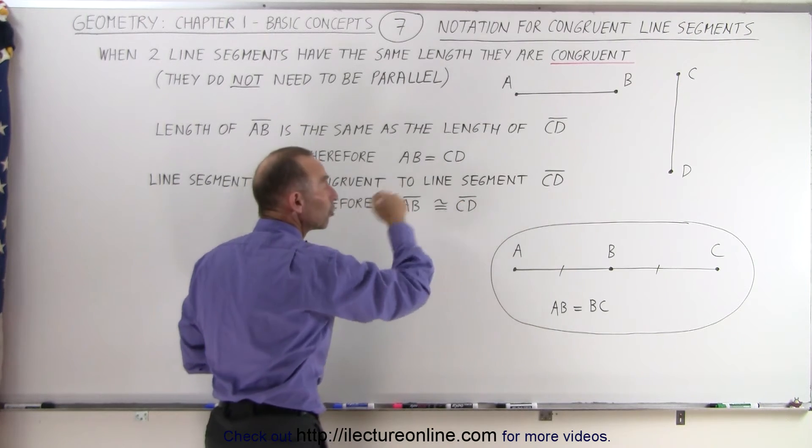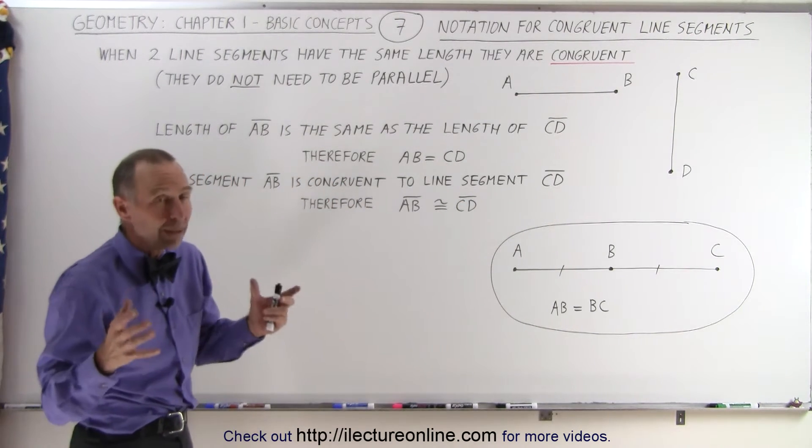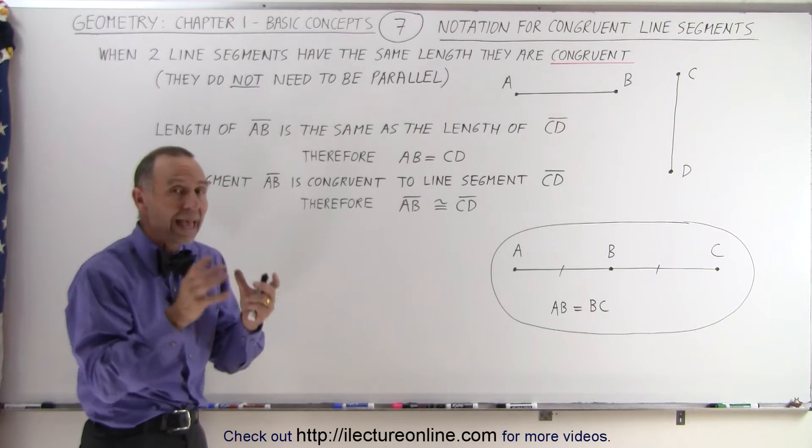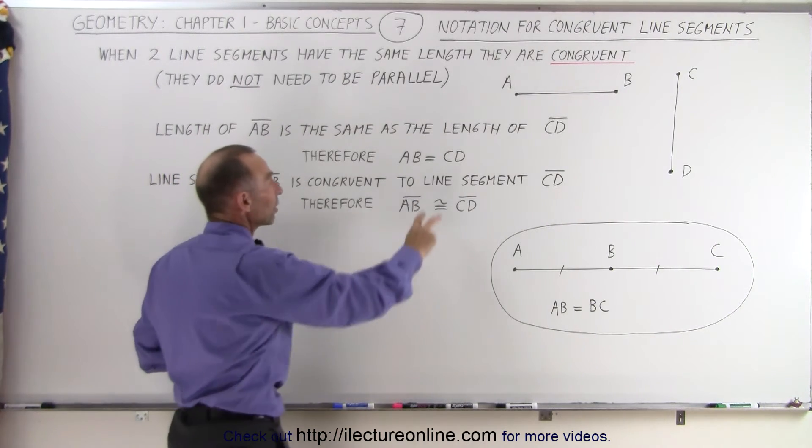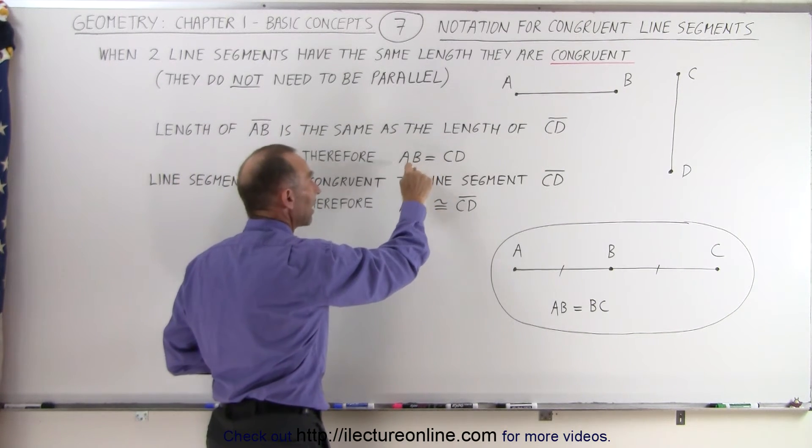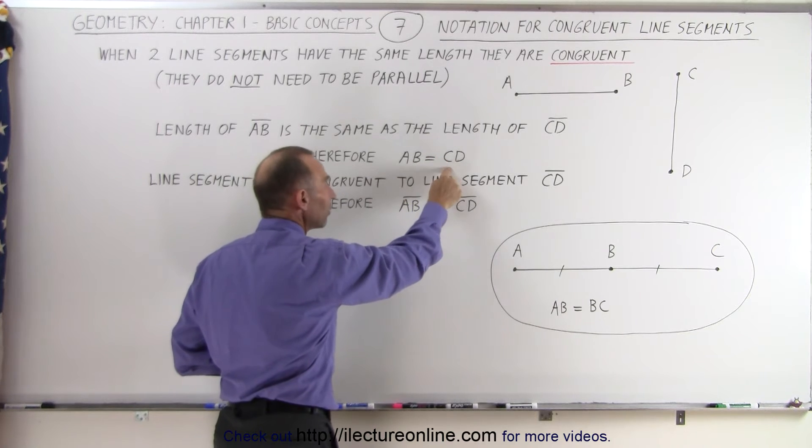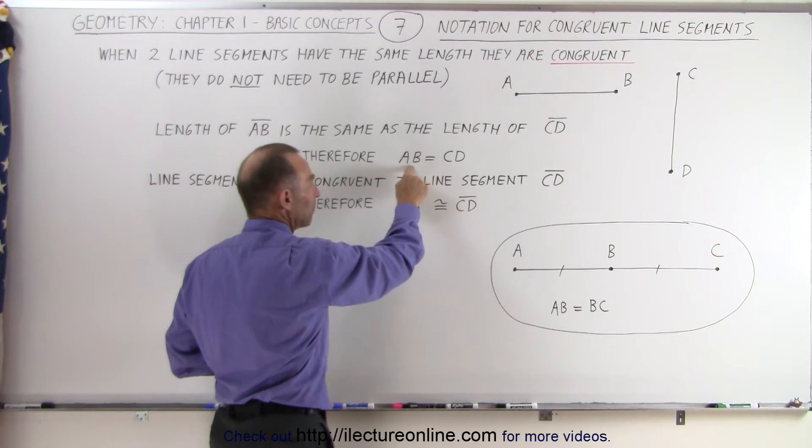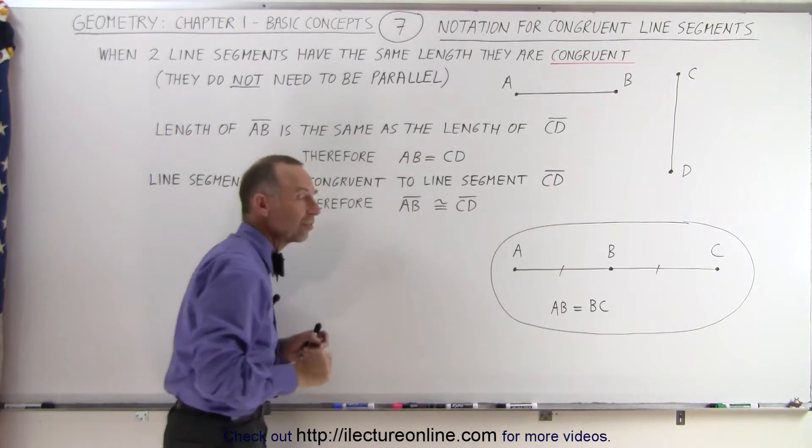This symbol means congruent, and that simply implies that those two line segments have the same length. Here we explicitly write that the length of AB is equal to the length of CD. The length of line segment AB is equal to the length of line segment CD.